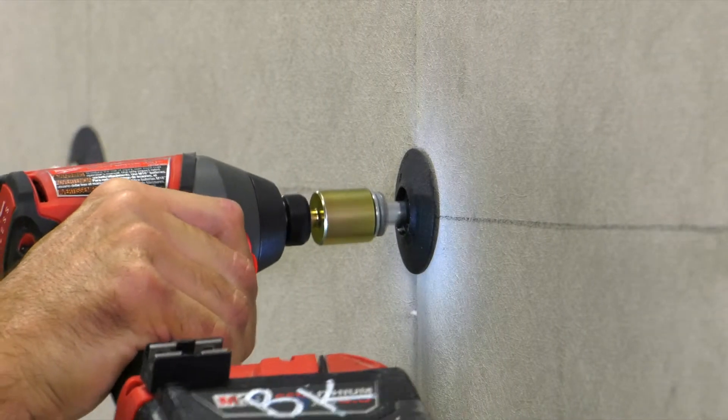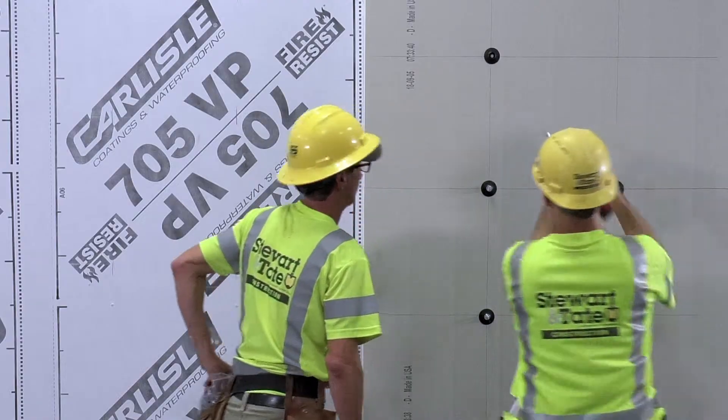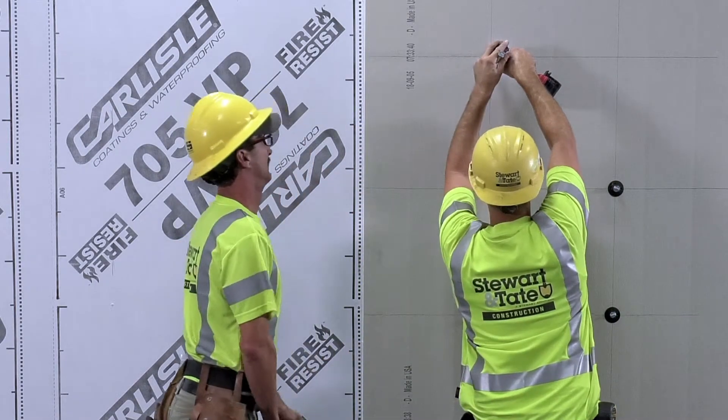Use the barrel-type anchor to secure the XCI-CG to the steel framing, fastening through the insulation and exterior gypsum sheathing.